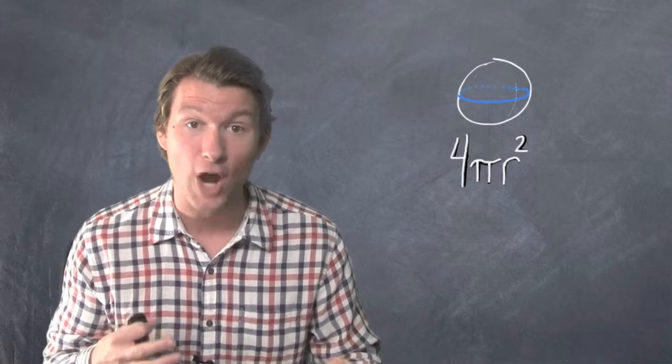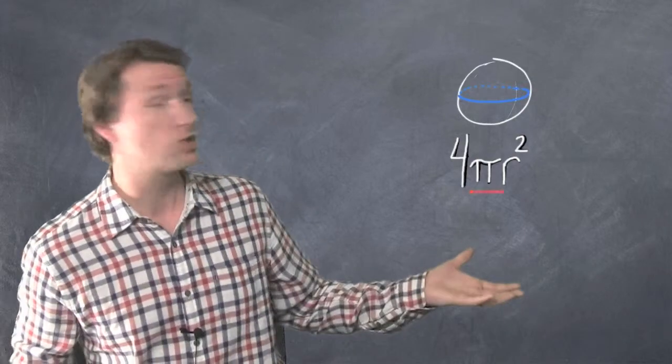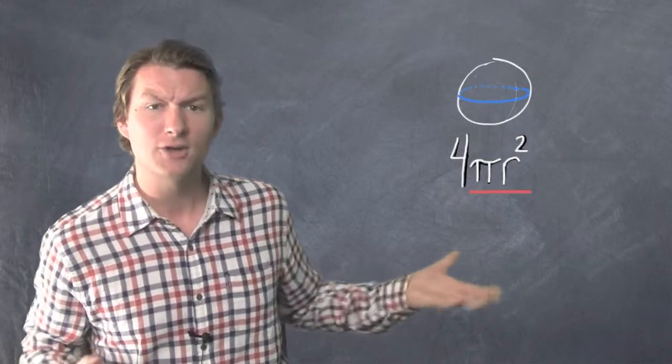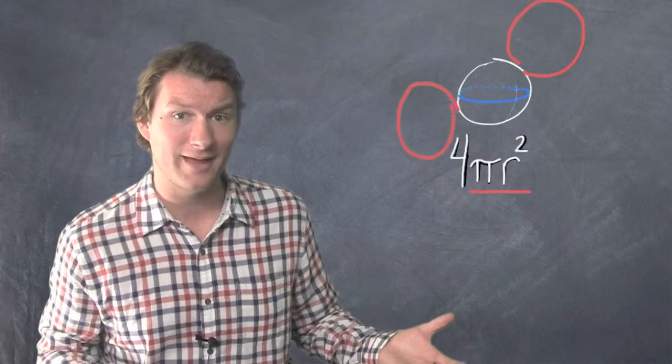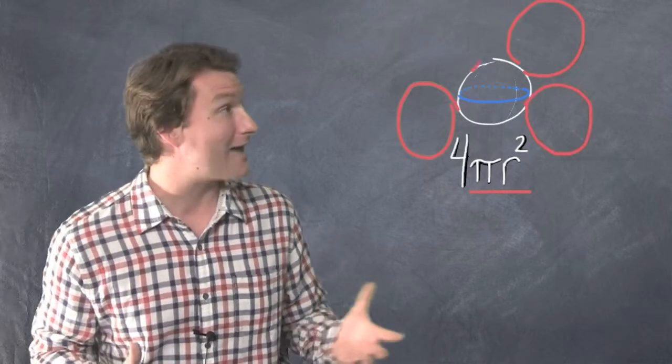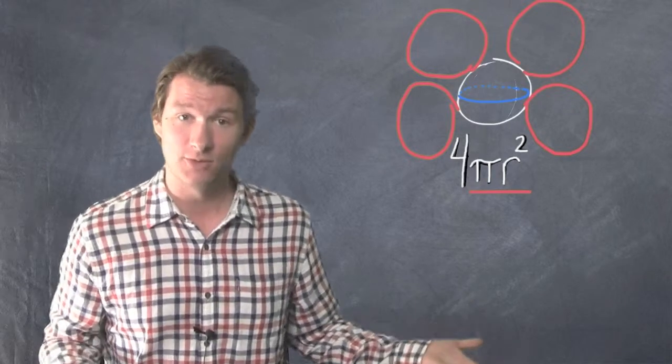The area of a sphere is 4πr². And if you look at that, πr², does that look familiar? πr² is how you find the area of a circle. So wait, you're telling me that the area of a sphere is exactly 4 times the area of a circle? Yeah, that's pretty cool, right?